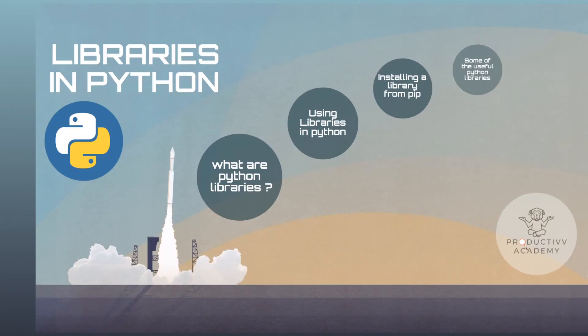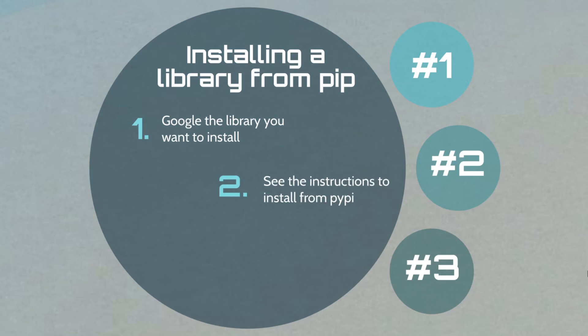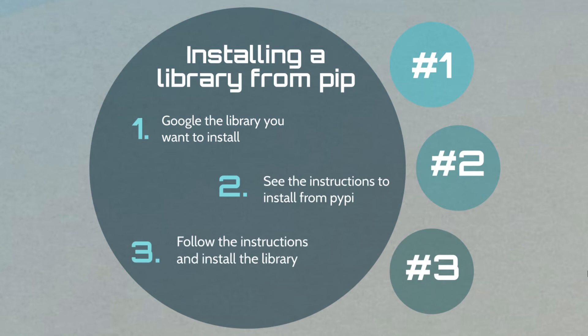Now let's see how you can download a library in Python. There are three steps. First, search for the library on Google. Next, check how to install the library — look at the PyPI documentation for instructions. Then, you can install the library.